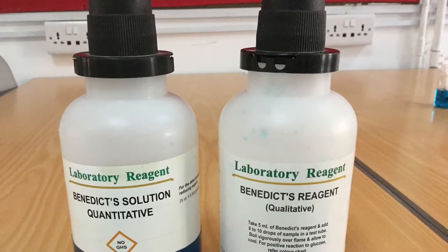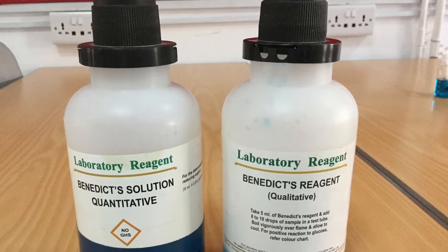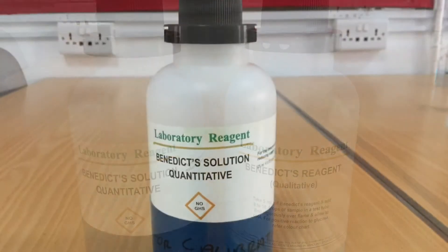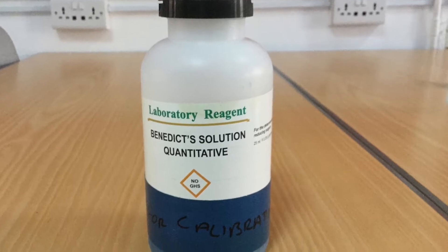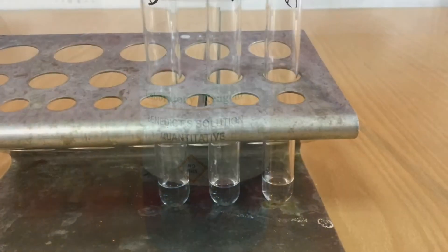In this experiment we're using quantitative Benedict's to produce a calibration curve and to find the concentration of glucose in three unknown urine samples.